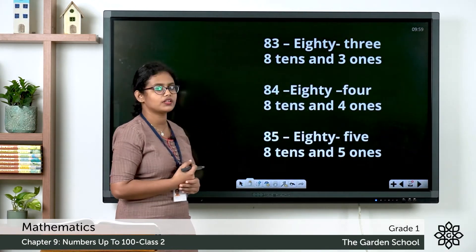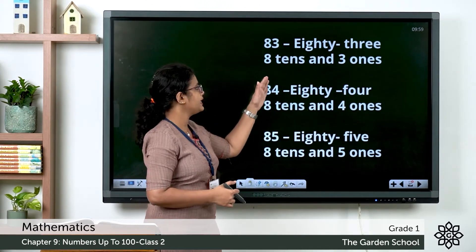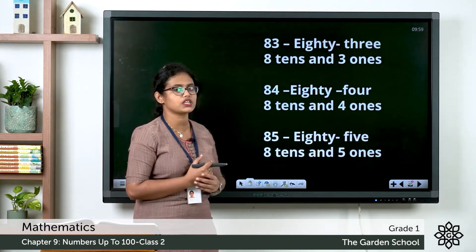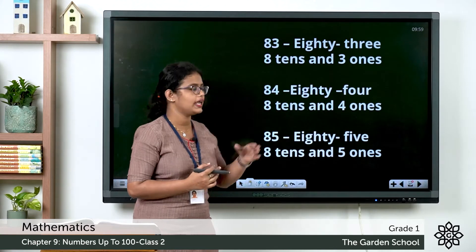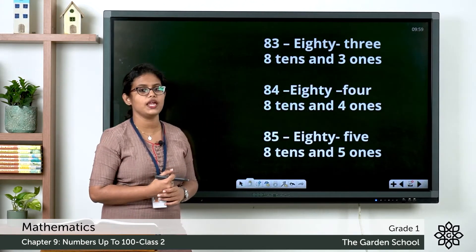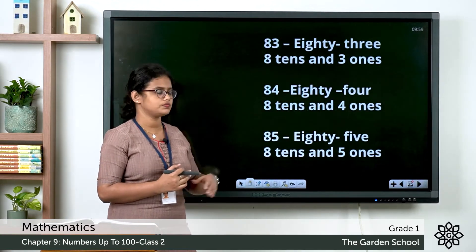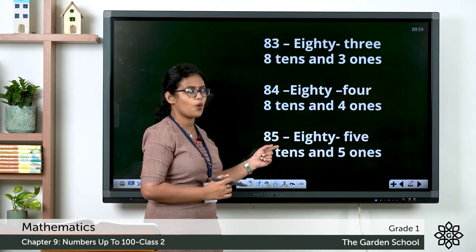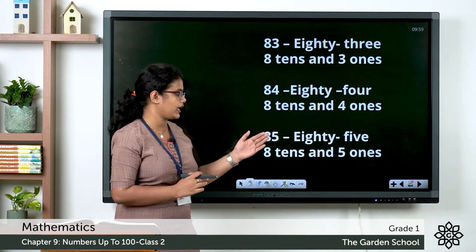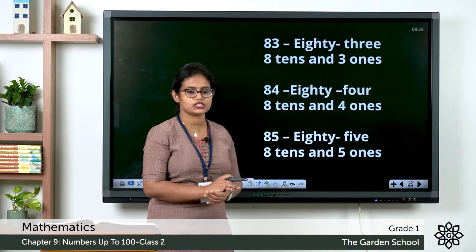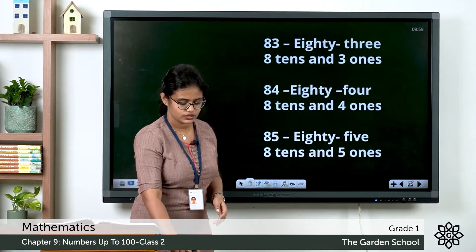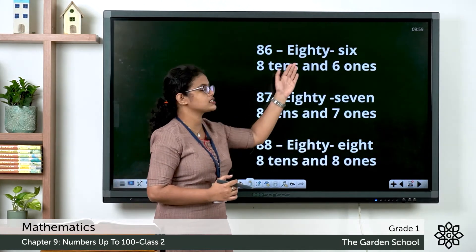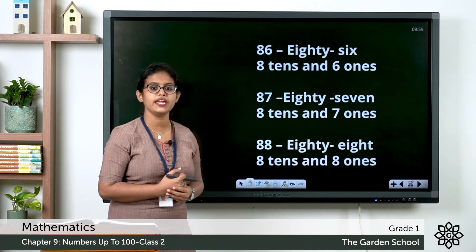After 82, which number? It is 83. Then 84 — 8 tens and 4 ones, that makes 84. Notice the next number after 84, it is 85. 5 in ones place, 8 in tens place, so 8 tens and 5 ones makes 85. Then the next number 86 — 8 tens and 6 ones.